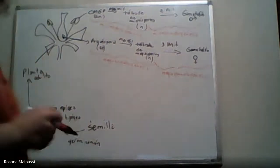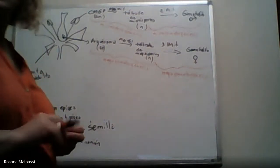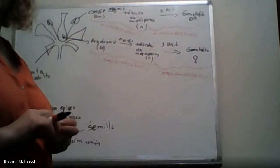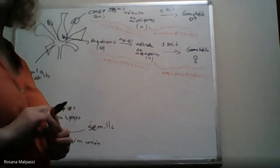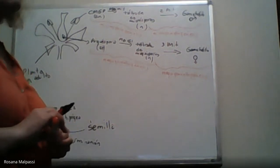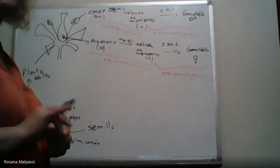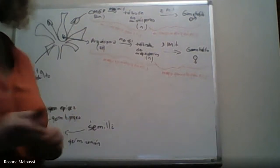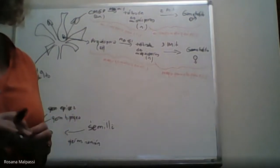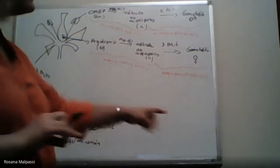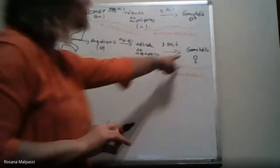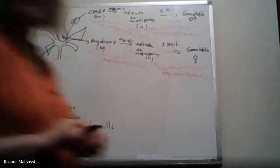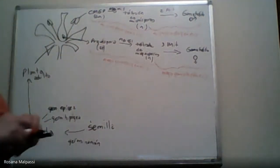¿Por qué hablamos de gametofitos? Porque son estructuras pluricelulares que están formadas por pocas células, pero son varias, dentro de las cuales está la gameta femenina. Eso es en el caso del gametofito femenino. Y en el caso del gametofito masculino, tiene las gametas masculinas.